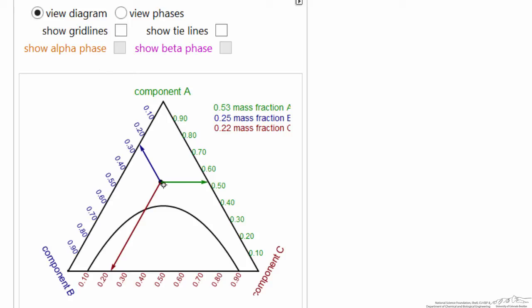Now if I move the point into the two phase region, it shows just the tie line. I could show all the tie lines, but let's just look at one. Now I can select to show the composition of one phase, called the beta phase, the purple.